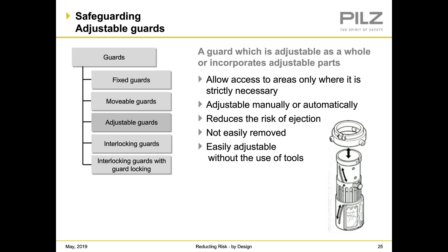Adjustable guards restrict access where strictly necessary, typically adjusted manually or automatically. The biggest risk reduction from these is preventing ejection of parts from inside the cell. They should not be easily removable without a tool. However, in industry, operators often neglect adjustable guards — this is one of the human interaction challenges associated with relying on administrative controls.